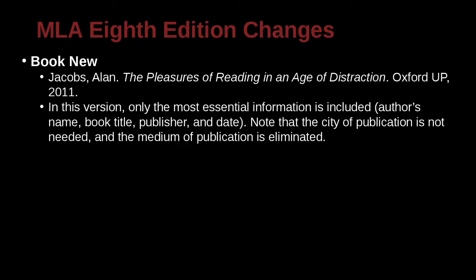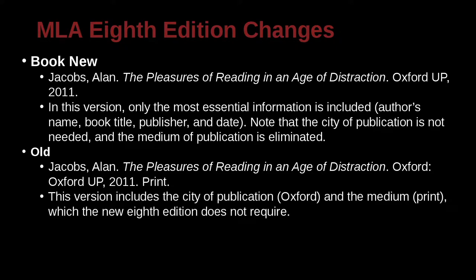Let's take a look at the changes for referencing books. In the reference list, we're going to have some things that are similar and some things that are different. For the book reference, Jacob Allen is the author, and the title is The Pleasures of Reading in an Age of Distraction, published by Oxford UP. In the new version, only the most essential information is included: the author's name, the book title, the publisher, and the date.